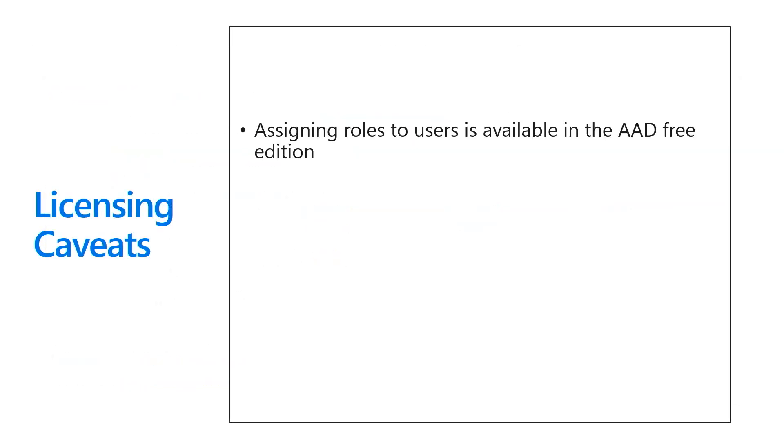There are some licensing caveats as well. We have different license models for Azure Active Directory — a regular license is free, but we have P1 and P2 licenses as well. If you want to assign roles to users, that's available in the free edition. If you want to assign security groups to roles, that requires a premium edition. That concludes this video talking about how you can use groups, group IDs, group names, and roles to specify more authorization possibilities for your application.